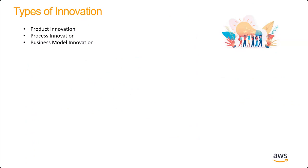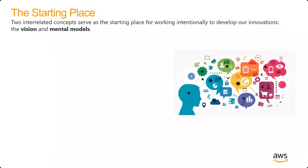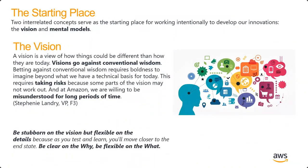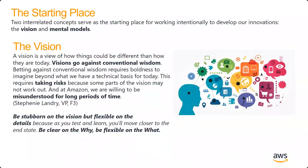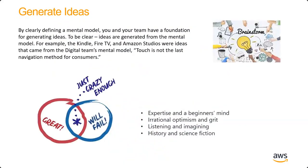We mentioned the product innovation process, innovation and business innovation, the questions we need to ask, and how we look at the mental model. Be stubborn on the vision but flexible on the details. Be clear on the why but flexible on the what. The mental model is a simple statement of cause and effect. According to Kidland's law, if you manage to write the problem properly and accurately, you're 50% done solving it.